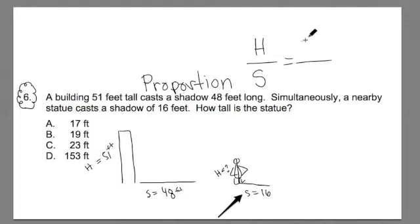In this case, the height is 51 and the shadow length is 48 for the building. And that's going to be proportional, or we're going to say equivalent, to the height of our statue, which we don't know, and the shadow length of the statue, which is 16.